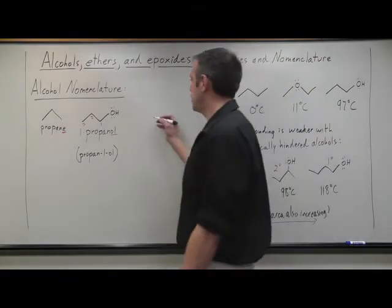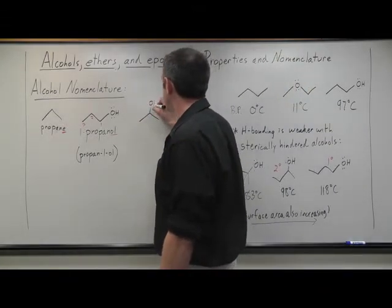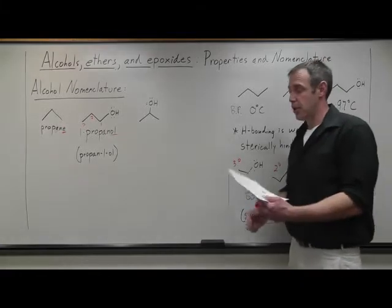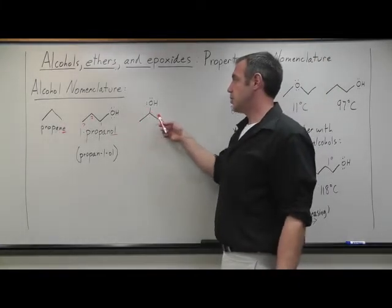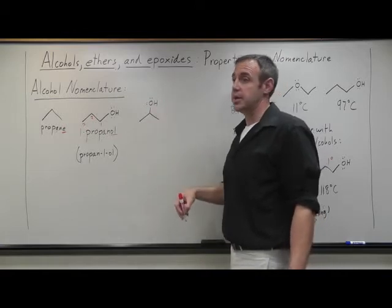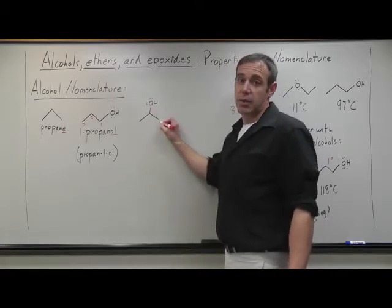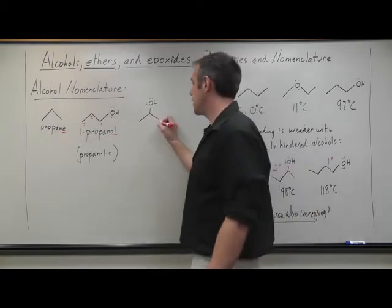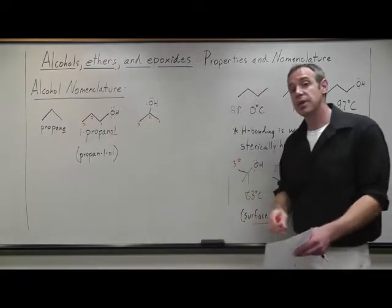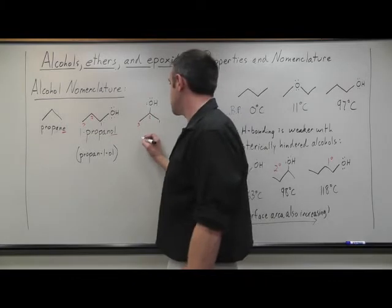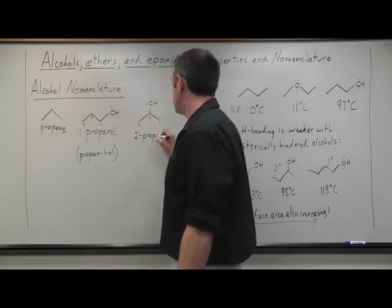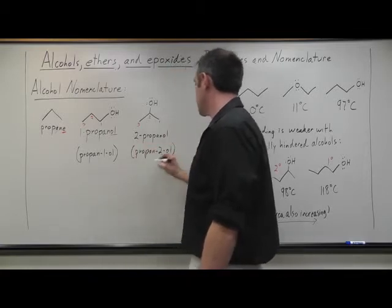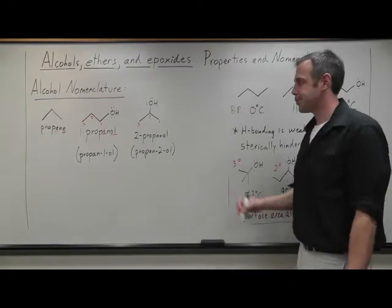And so there's another propanol that's out there, and that would be this molecule. And so instead of being 1-propanol, we still have a three-carbon chain that contains the alcohol bonded to it, but we have to number from one of the ends and we'll number such to give this the lowest number. It won't matter which side we number from. Either way, we would encounter that alcohol group at the second carbon. And so this would be 2-propanol or propan-2-ol. Either one's acceptable.